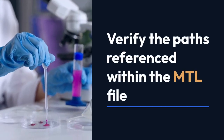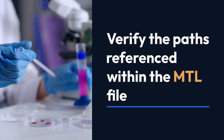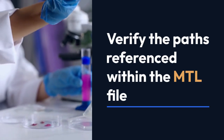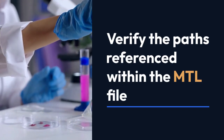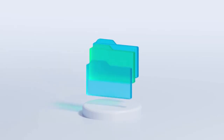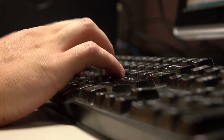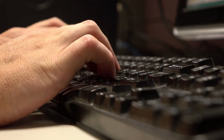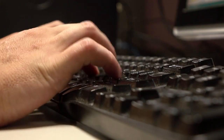Step 6: If you encounter issues, it's a good idea to verify that the paths referenced within the MTL file are correct, especially if your textures are not in the same folder as the OBJ and MTL files. You might need to manually adjust those paths within the Material Editor if necessary.